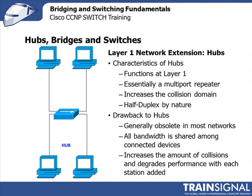A hub increases the collision domain. The more devices on the network, the greater the amount of collisions, the greater the collision domain. And it's half-duplex by nature — you cannot have a full duplex hub. It simply doesn't work.